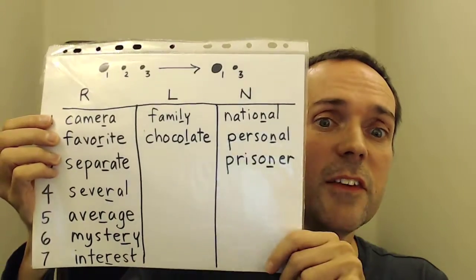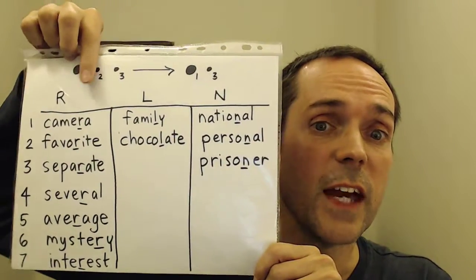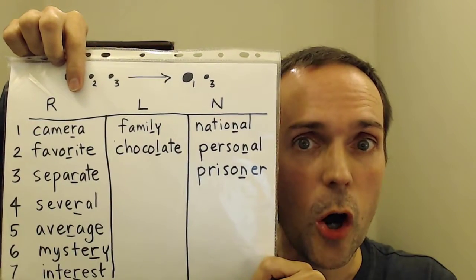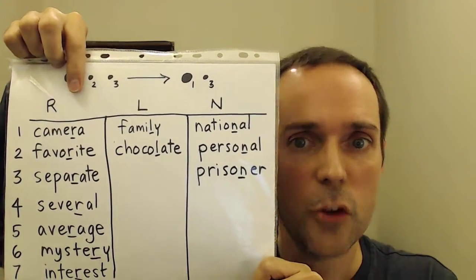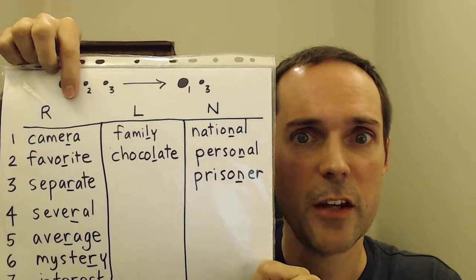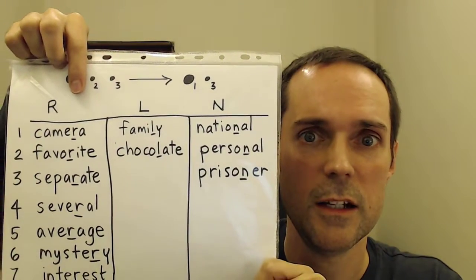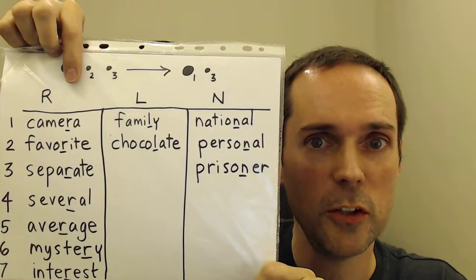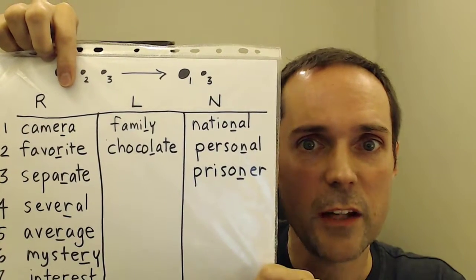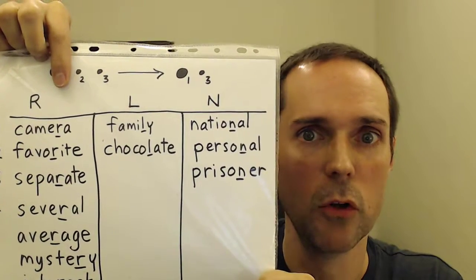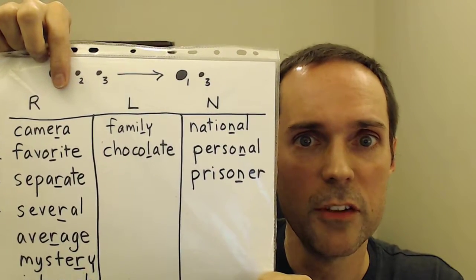Let's take a look at some more examples. In this first column, you can see that the second syllable — the syllable we're going to leave out — ends in R. So we usually say favorite instead of favorite. The adjective separate, two syllables, instead of separate. We say several instead of several.